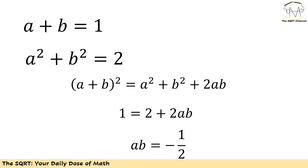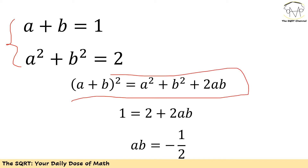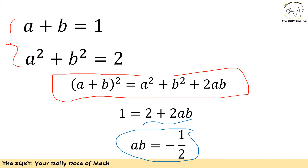To solve this problem, let's start with the first two equations: a plus b equals to 1, and a squared plus b squared equals to 2. Using the identity (a plus b) squared equals a squared plus b squared plus 2ab, on the left-hand side we have 1 squared, and on the right-hand side we have 2 plus 2ab. So ab equals negative 1 over 2.